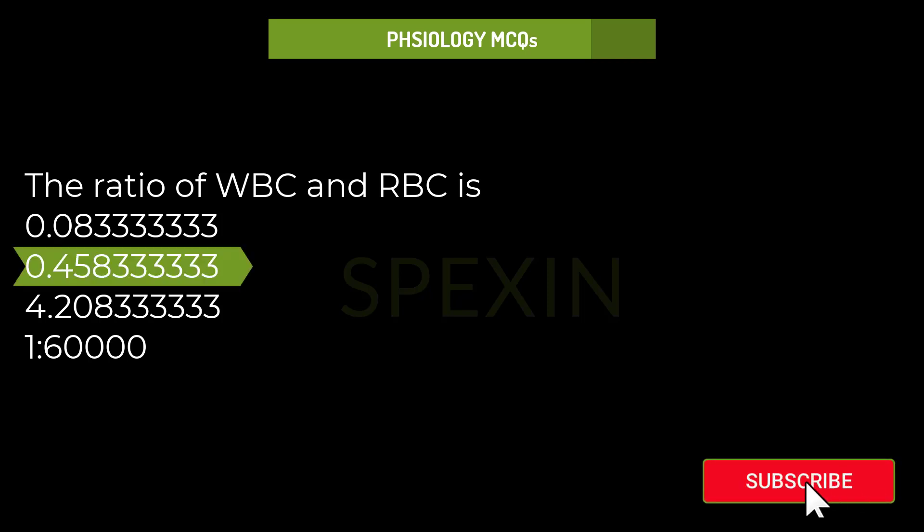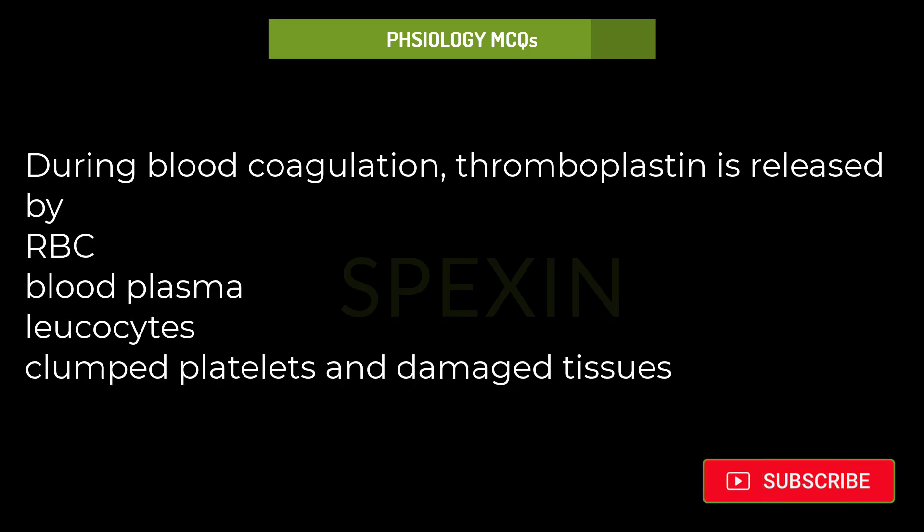The ratio of WBC and RBC is: 1/12, 1/550, 11/500, 1/600. Correct answer: 1/550 (approximately 0.0018).